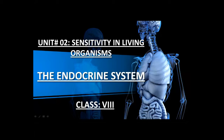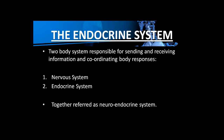This is our Unit Number 2: Sensitivity in Living Organisms. Today we start the topic of the endocrine system from your book Amazing Science, Class 8. What is the endocrine system? There are two body systems responsible for sending and receiving information and coordinating the body's responses, and these two systems are the nervous system and the endocrine system.